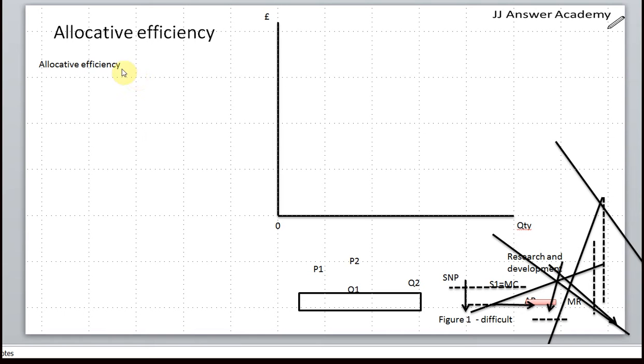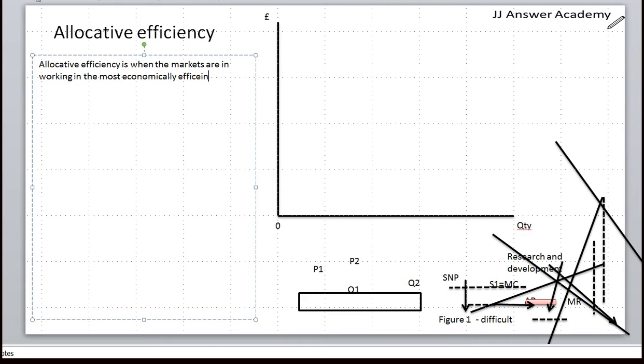We're going to understand allocative efficiency. So what is allocative efficiency? Allocative efficiency is when the markets are working in the most economically efficient manner.